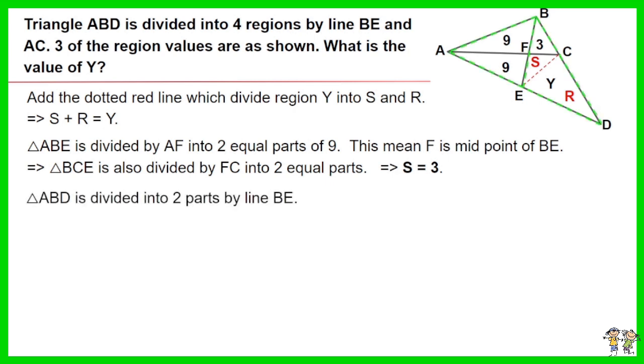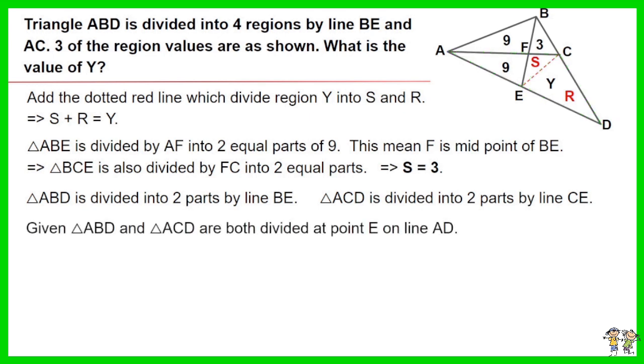Triangle ABD is divided into 2 parts by line BE. Triangle ACD is divided into 2 parts by line CE. Given triangle ABD and triangle ACD are both divided at point E on line AD.